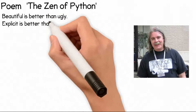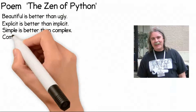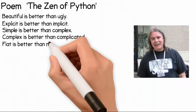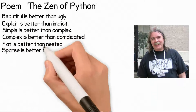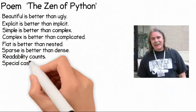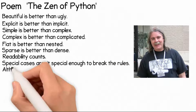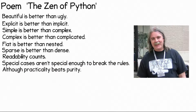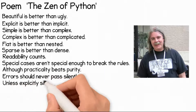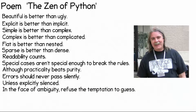The Zen of Python goes like this: Beautiful is better than ugly. Explicit is better than implicit. Simple is better than complex. Complex is better than complicated. Flat is better than nested. Sparse is better than dense. Readability counts. Special cases aren't special enough to break the rules. Although practicality beats purity, errors should never pass silently, unless explicitly silenced. In the face of ambiguity, refuse the temptation to guess.